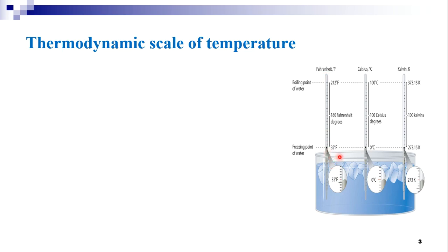As shown, for the freezing point of water, the temperature in degree Fahrenheit is 32°F, which is equivalent to 0°C, which is equivalent to 273.15 Kelvin. We use these thermometers according to our convenience of measurement of temperatures.